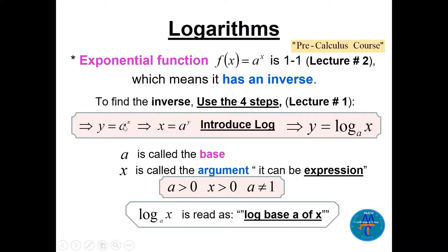Step two: interchange x and y, so x = a^y. Now step three, we have to solve for y. The only way to find y here is to introduce logarithms — take log on both sides. So y = log base a of x. That is how we read it: log base a of x.